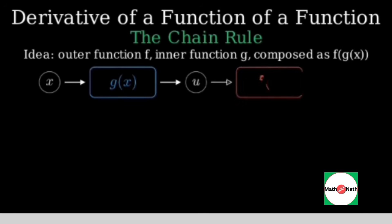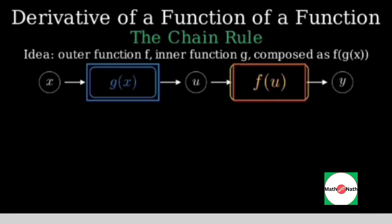Think of composition like two machines in a row. The input x goes into the inner machine g, which outputs a value we can call u. Then u goes into the outer machine f, producing the final y. Let's draw the flow: x to g of x to u to f of u to y.